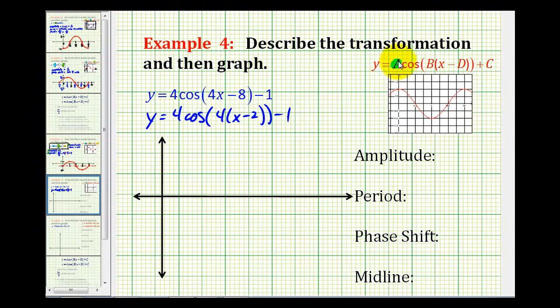So now we should recognize that A is equal to 4, B is equal to 4, D is equal to 2, and C is equal to negative 1.